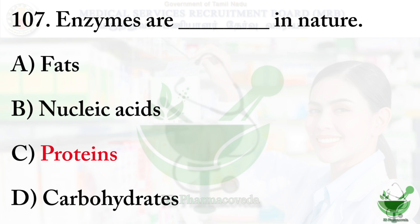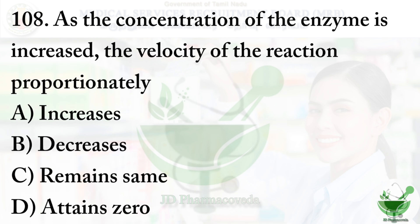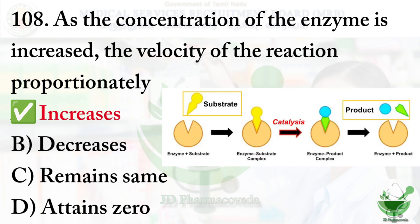Question number 108: As the concentration of the enzyme is increased, the velocity of the reaction proportionally — option A – Increases, option B – Decreases, option C – Remains same. The right option is option A – Increases, because enzymes act as catalysts and increase the rate of the reaction.